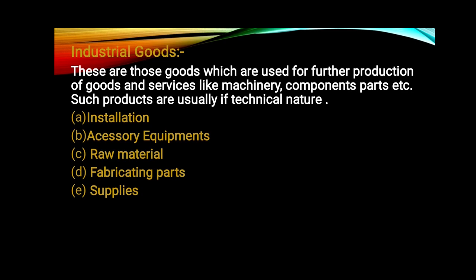Next is accessories equipment. Accessories equipment basically refers to moveable factory equipment which you can easily move from one place to another. For example, lift trucks, hand tools, drills — these all help in production. They are inexpensive in nature and have a short life, but they are of routine nature and help in daily production.